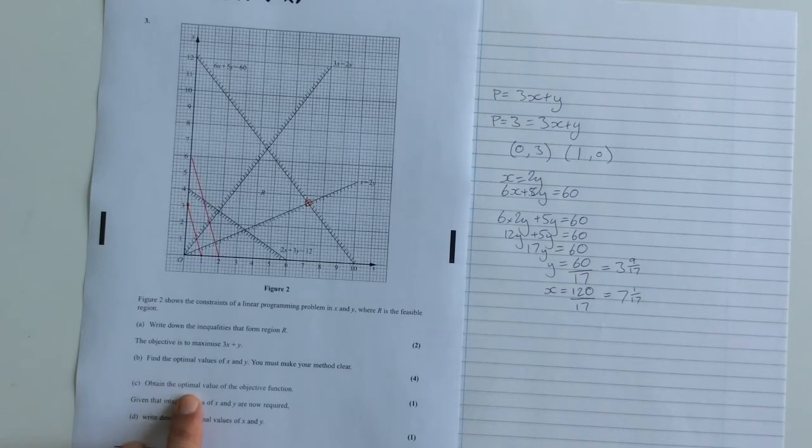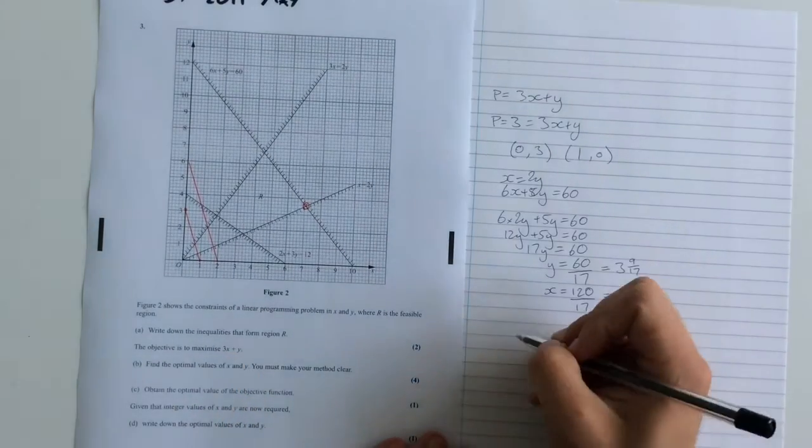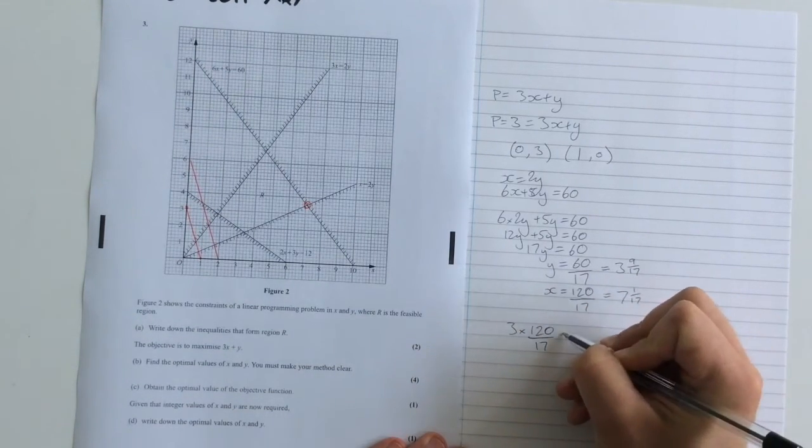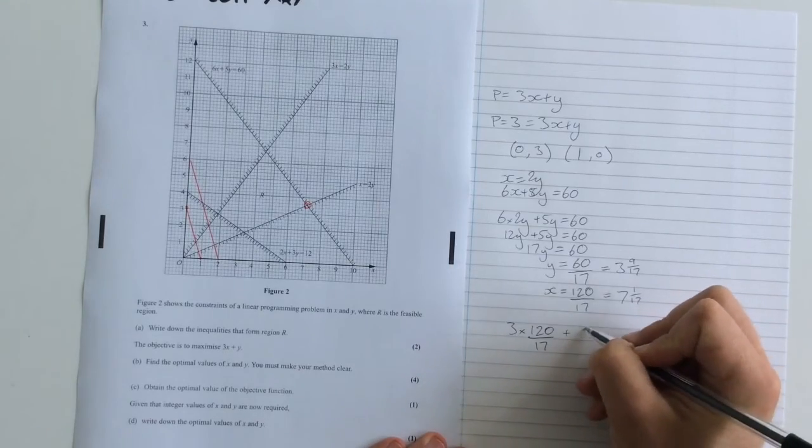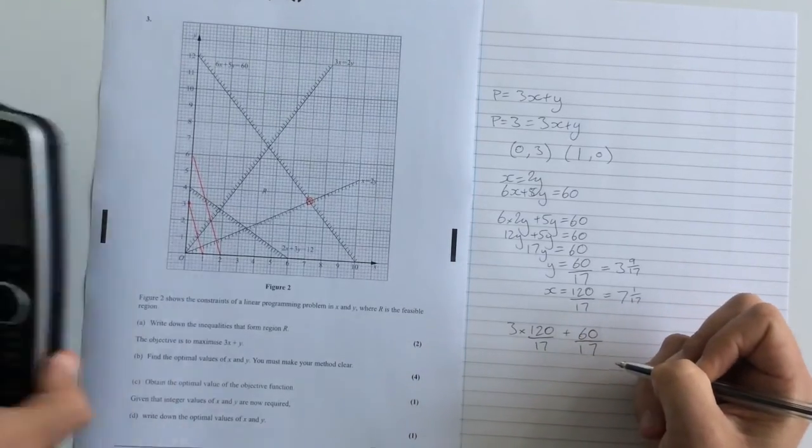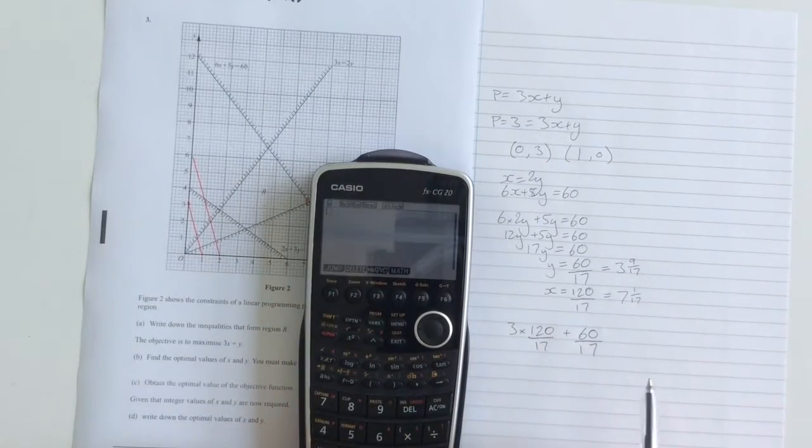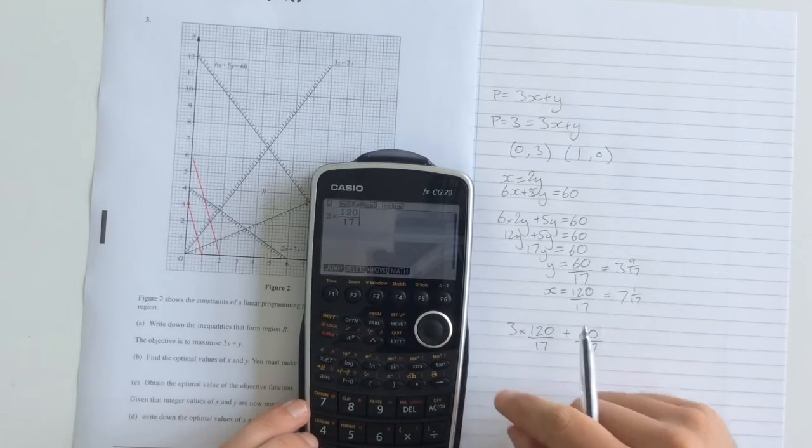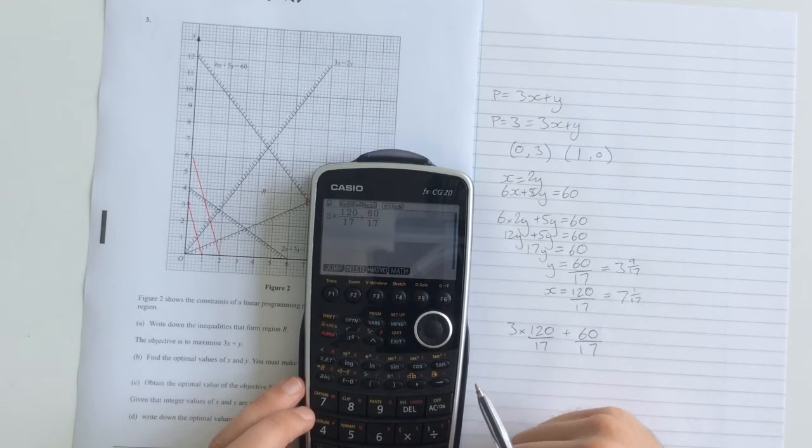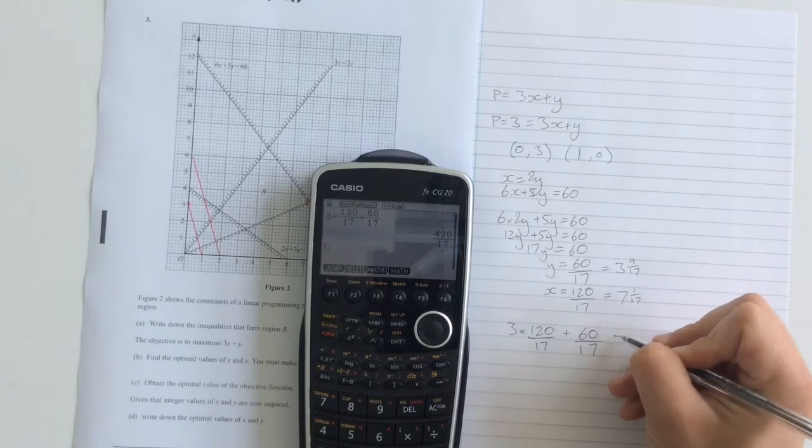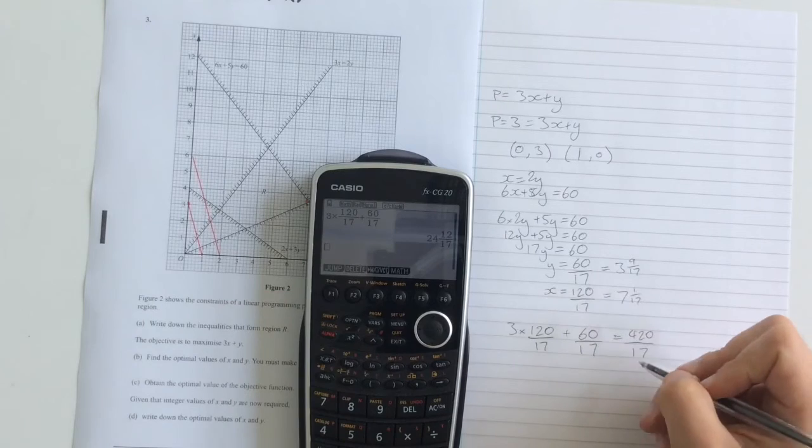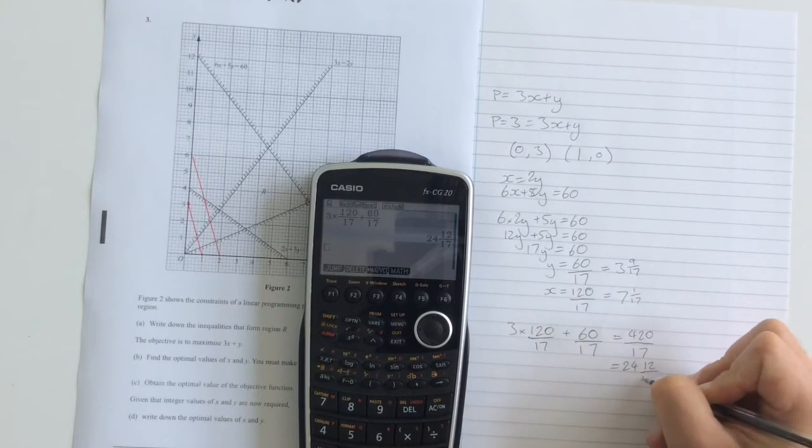The next part of the question asks us to obtain the optimal value of the objective function. Well, the objective function is 3x plus y, so what I need is 3 times my x value plus my y value. And very simply, all I'm going to do is use the calculator to work this one out. 3 times 120 over 17 plus 60 over 17. And I get the answer 420 over 17 or 24 and 12 seventeenths.